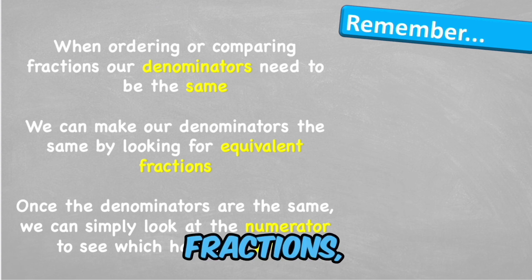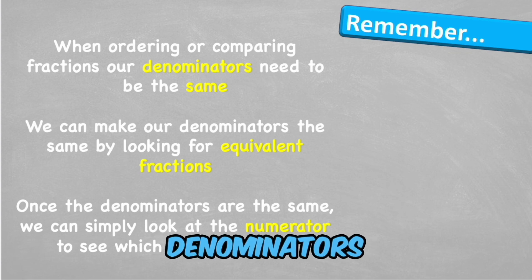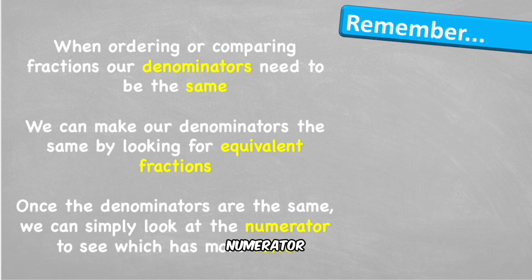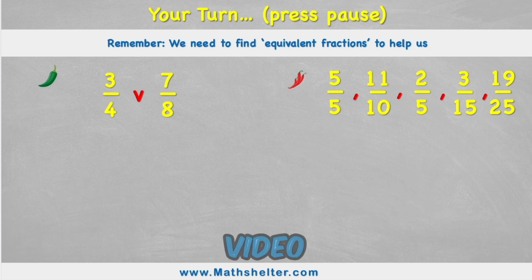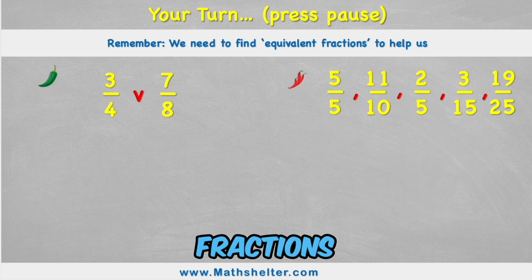When ordering or comparing fractions, our denominators need to be the same. We can make our denominators the same by looking for equivalent fractions. Once the denominators are the same, we can simply look at the numerator to see which one has the greater value. So now it's your turn. Press pause on the video now and see if you can try and compare and order these fractions here.